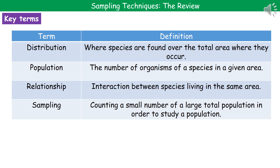Welcome to our review on sampling techniques. The first thing we need to know are a few key terms to understand what the questions will be asking us. We've got four key terms to do with sampling. The first one is distribution — that's talking about where species are found over the total area where they could occur.